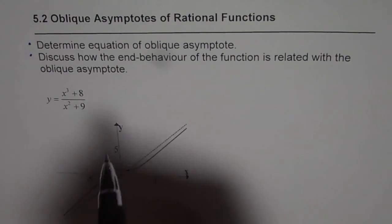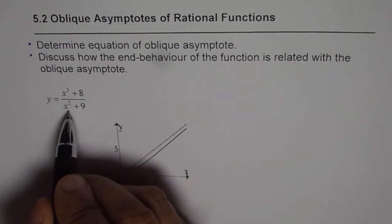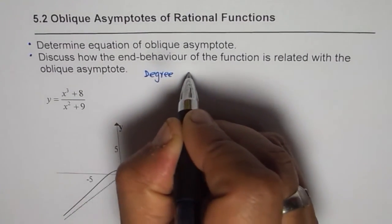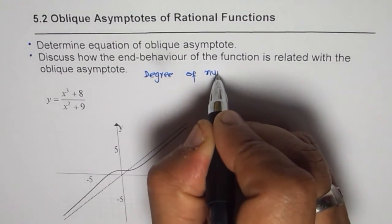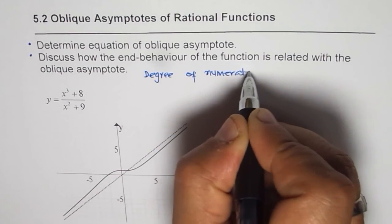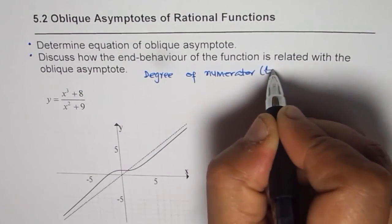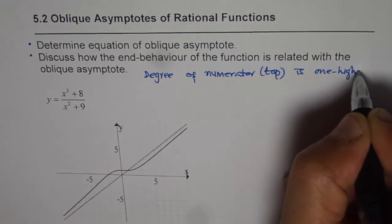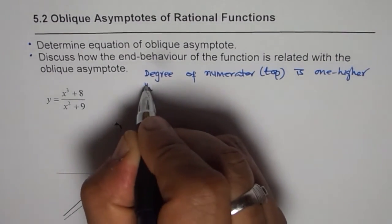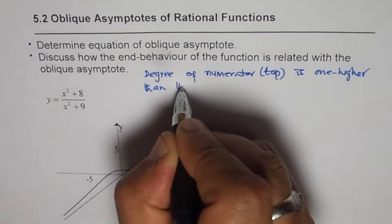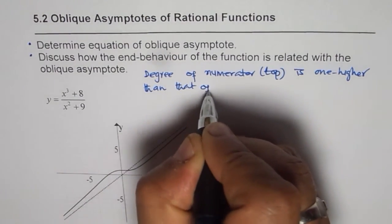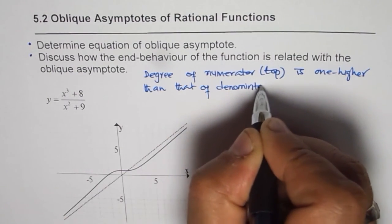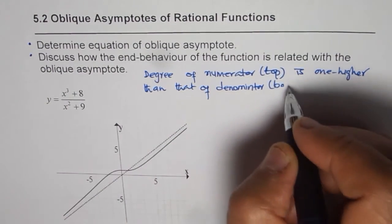Now as you note, degree of numerator is one higher, since degree of numerator, which is the top part, is one higher than that of denominator, that is the bottom part of the rational function.